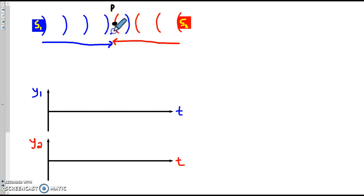Between these two blue crests, there's a trough. So at this point P, we have a red crest and a blue trough. The waves cancel.